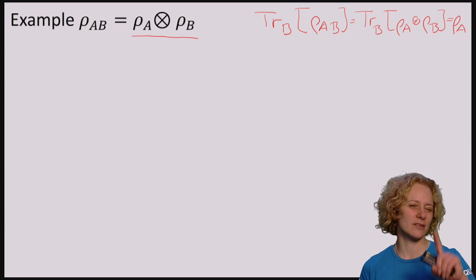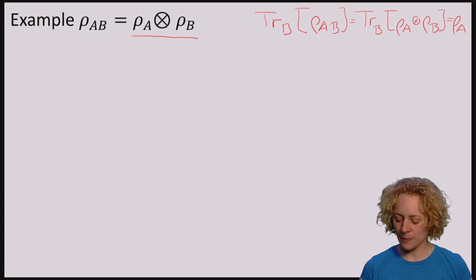Let's now first have a look at method number one of computing the partial trace. Remember that method number one of computing the partial trace can be applied whenever you've already written ρ_AB in terms of some tensor product.